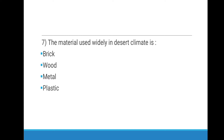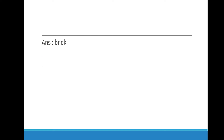Seventh question: The material used widely in desert climate is which of the following? Options are Brick, Wood, Metal, Plastic. Correct answer is Brick.